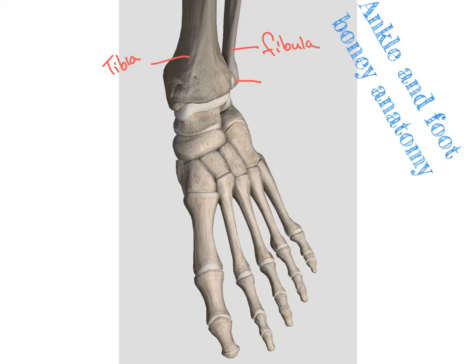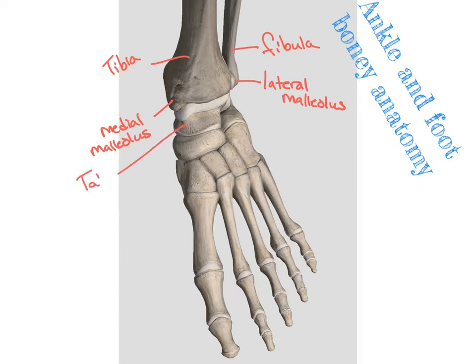On the fibula and the lateral side, we have our lateral malleolus, and on the medial side, our medial malleolus. These act like pulleys for our musculature to run around. Looking down into the foot and moving towards the front, underneath the tibia we have our talus, and underneath that we have our calcaneus.